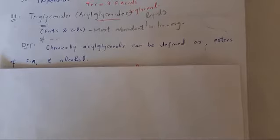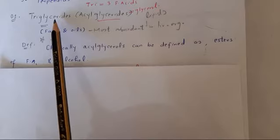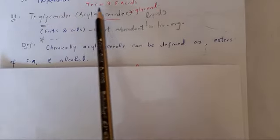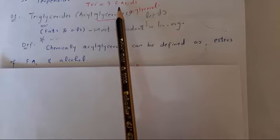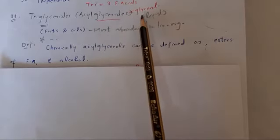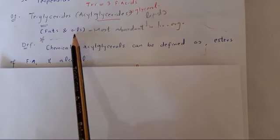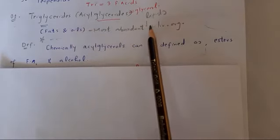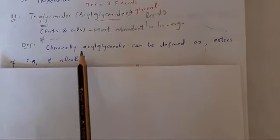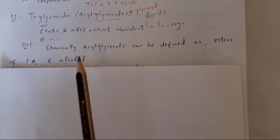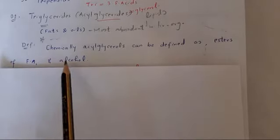So the first group is triglycerides or acylglycerols. Why called triglycerides? Because they are made up of 3 fatty acids and glycerol, a 3-carbon alcohol. Commonly known as fats and oils, these are the most abundant lipids in living organisms. Chemically, acylglycerols can be defined as esters of fatty acids and alcohol.